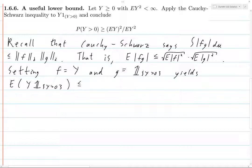So less than or equal to, we have the expected value of Y squared - I'll drop the absolute values because this is a positive function - square root. And then we multiply by the expected value of, we take this indicator function and square it, and then the square root of this entire thing.